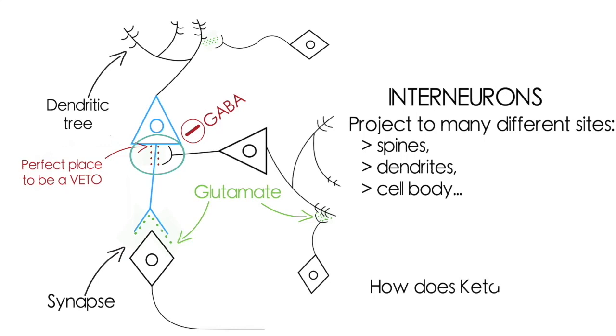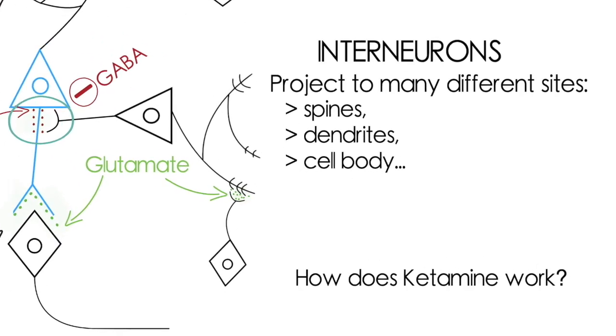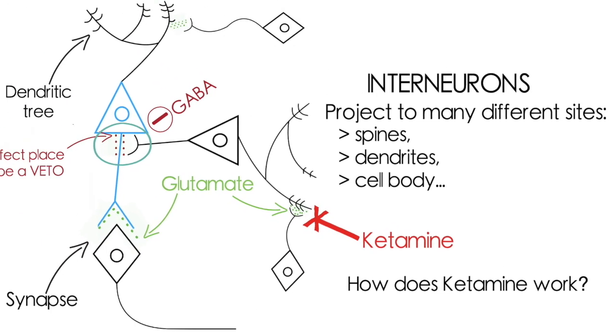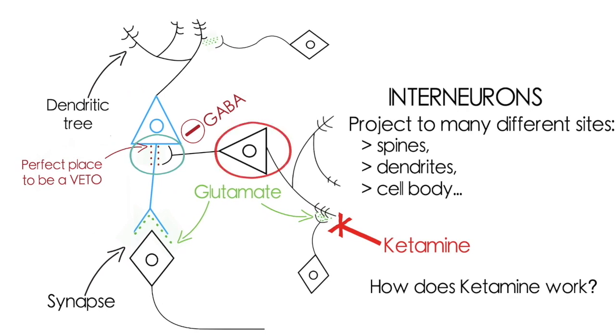So how does ketamine work? Well, it blocks the NMDA receptors that glutamate binds to. So if it does that just here, then it's going to reduce the firing of this interneuron and reduce its veto here.